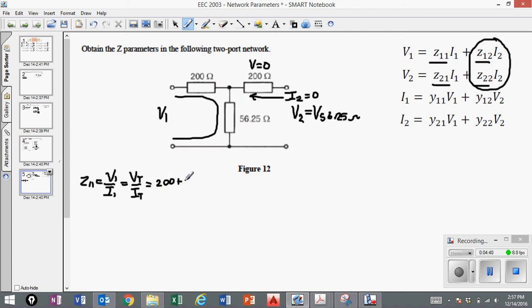So Z11 would be 256.25 ohms. So we already have solved for Z11.